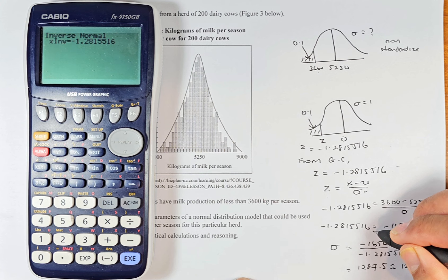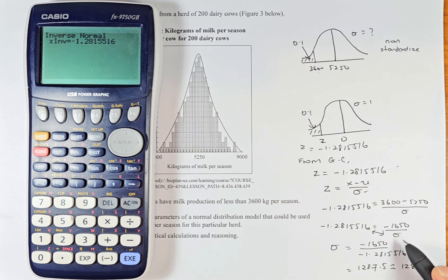If you do not know your algebra, you can swap places when it's at the bottom. Sigma goes up and this comes down. So sigma is equal to 1,650 divided by this number, negative 1.28155516. Put in your calculator and the answer is 1,287.5 or rounded to the nearest kilogram is 1,288 kg.